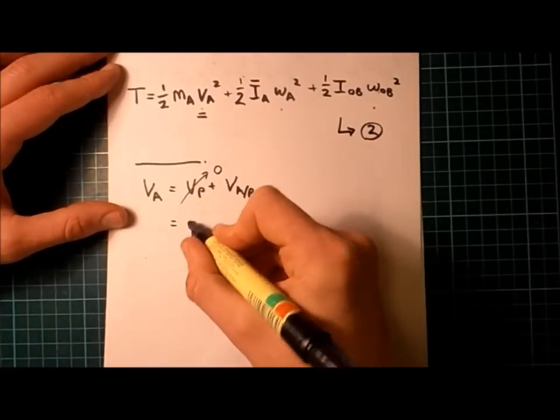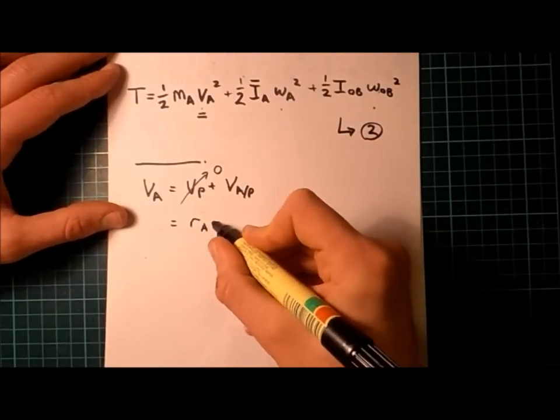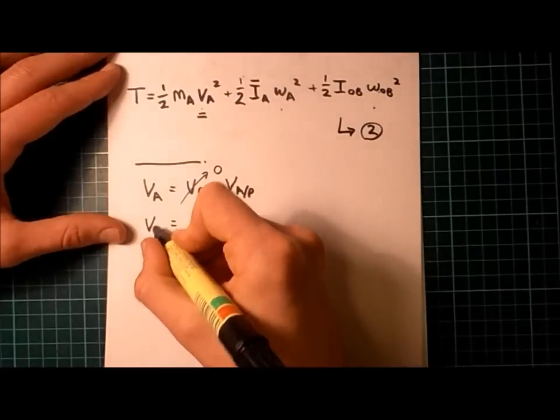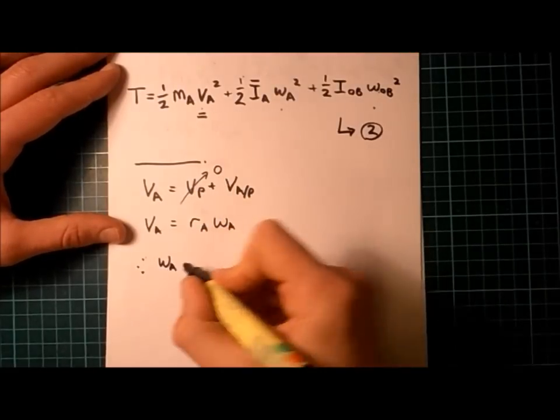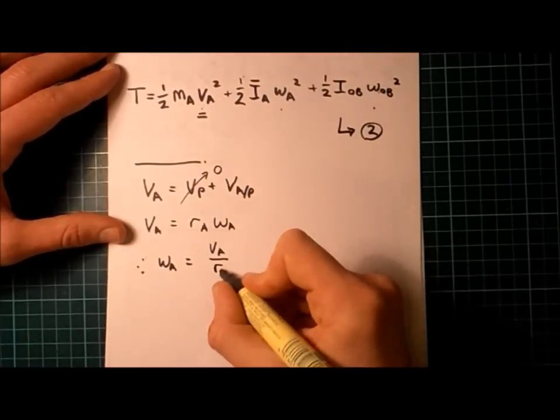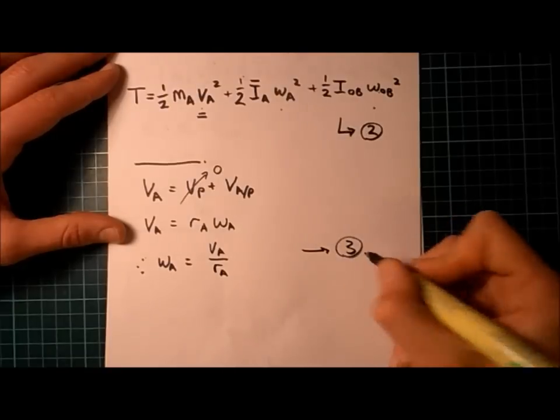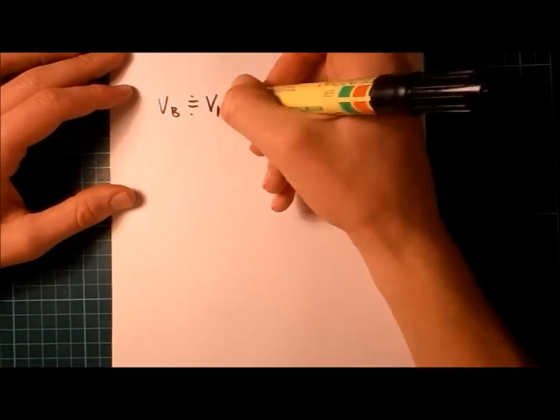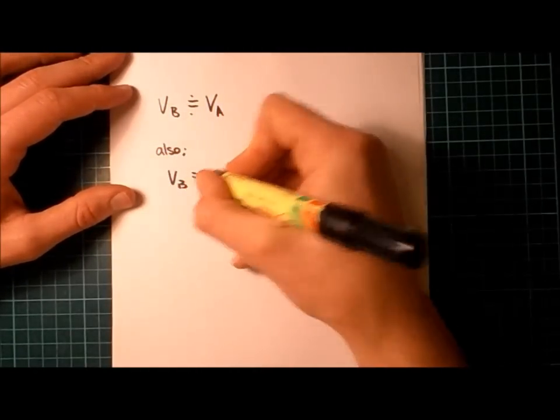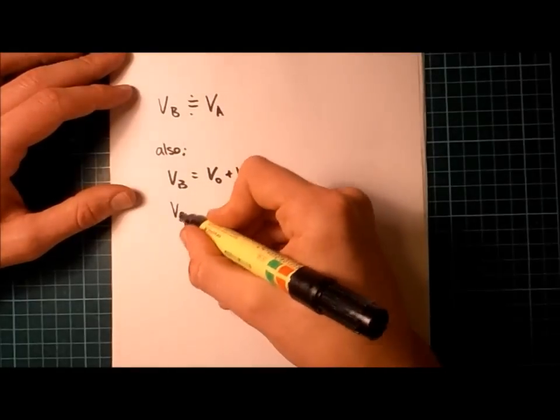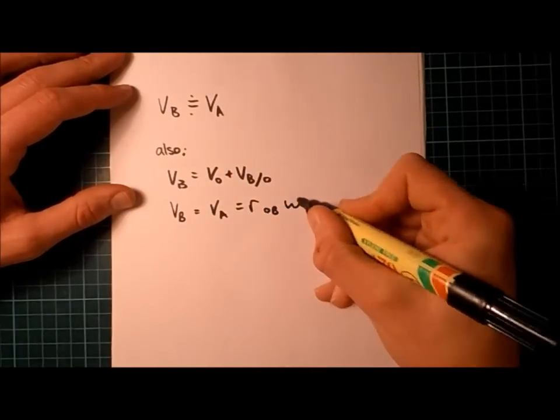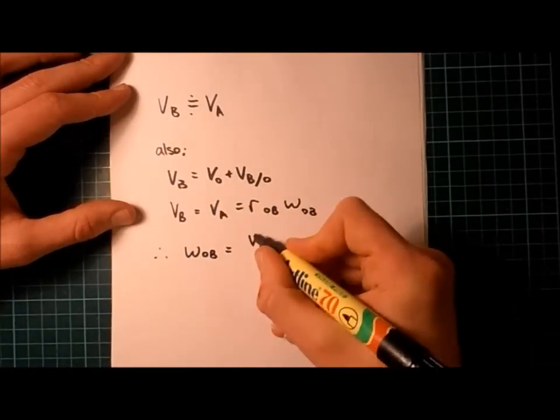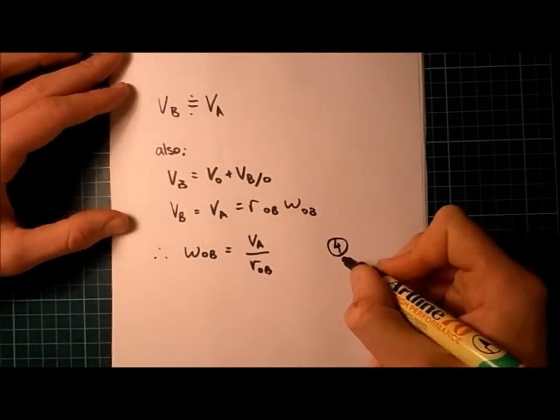So here, I'm calculating kinematic relationships between the components to work out a relationship between V A, omega A, and omega OB. To get reasonable relationships between these quantities, I'm having to assume that the system is only vibrating a small amount. So, sin theta approximately equals zero, and cos theta approximately equals one. Thus, V B approximately equals V A.